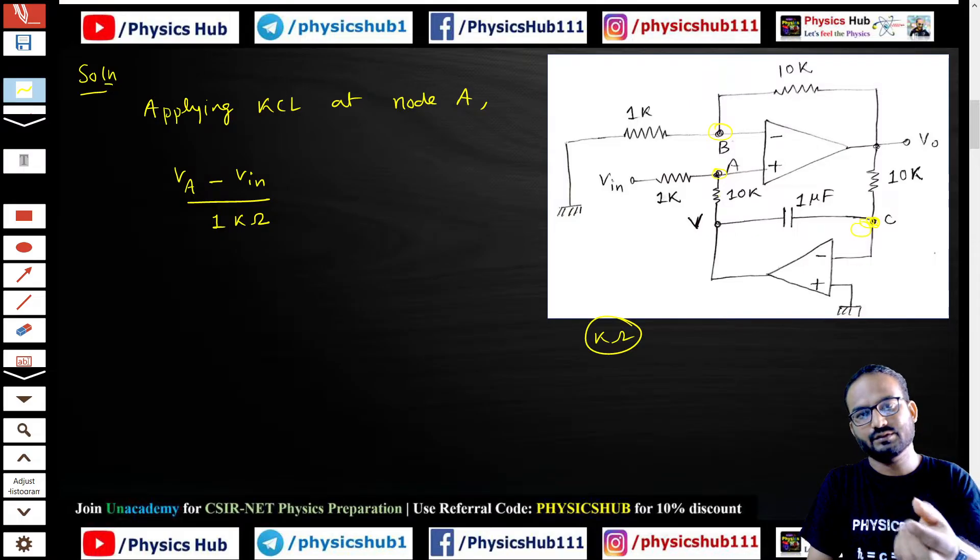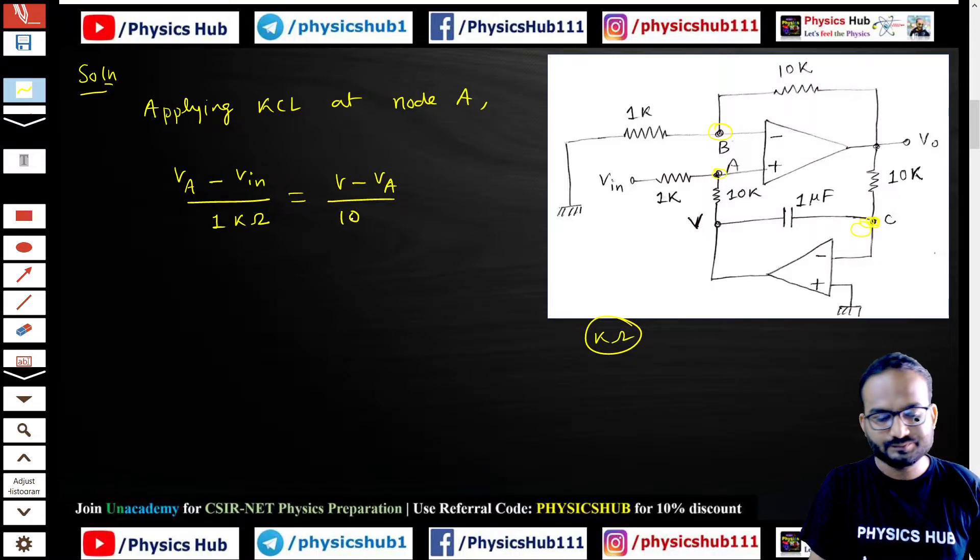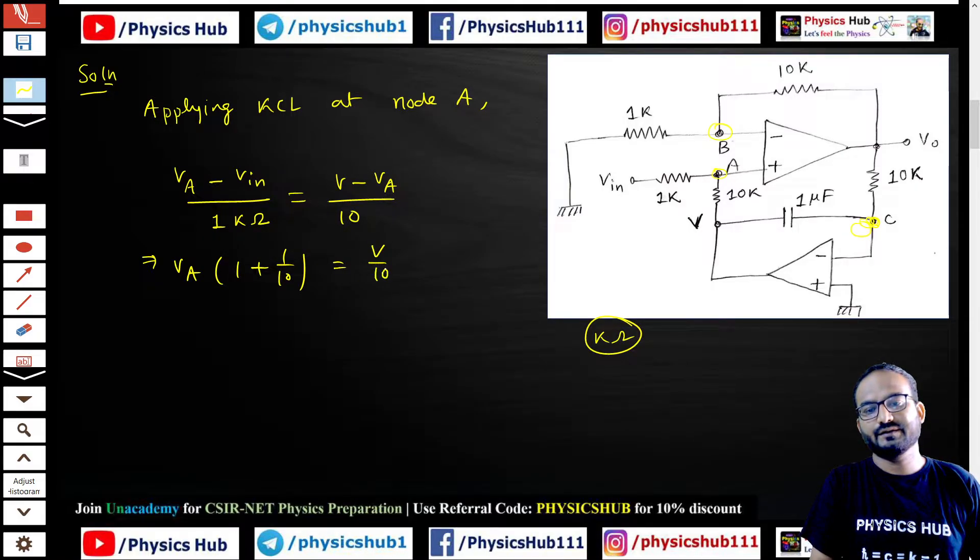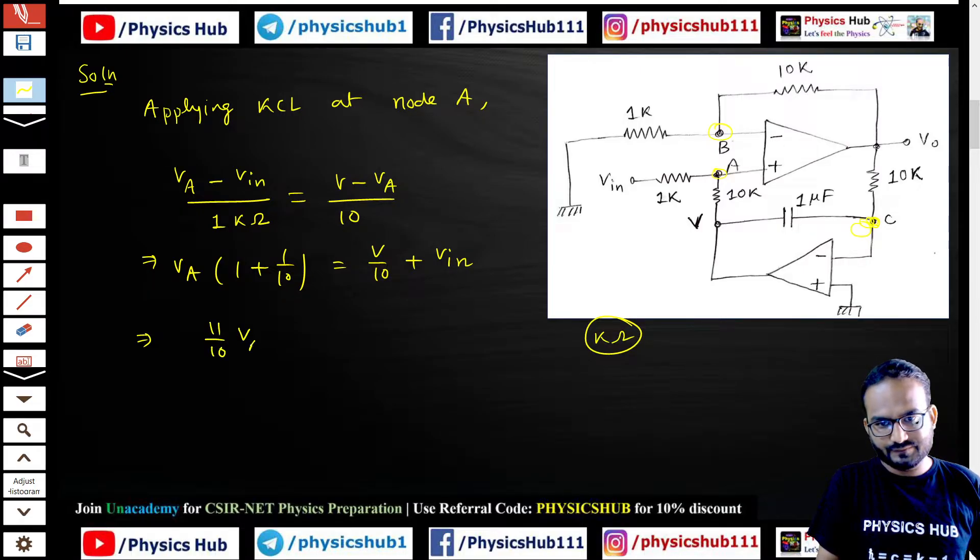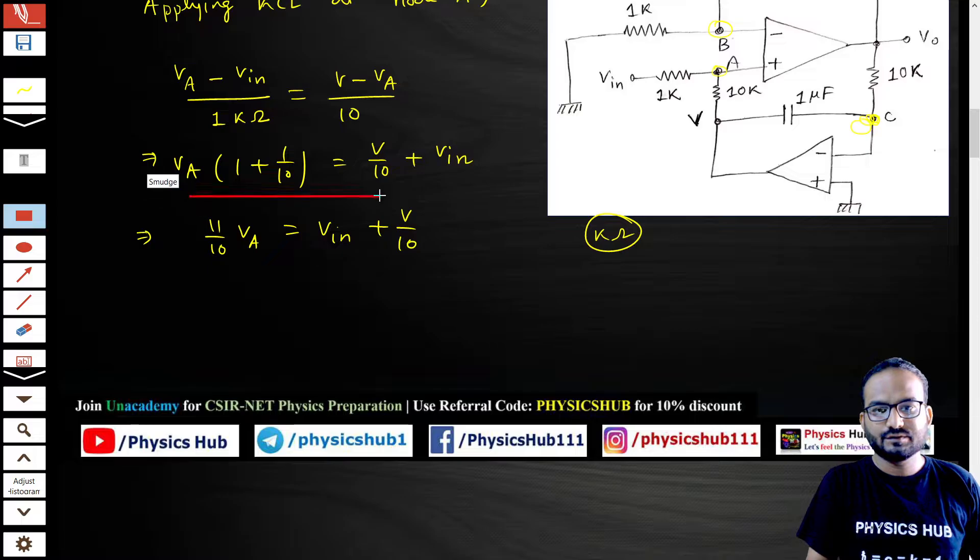V_A minus V_in would equal V minus V_A by 10. You can take V_A common, so 1 plus 1/10 equals V by 10 plus V_in. From here you get 11 by 10 V_A equals V_in plus V by 10. Let's name this equation as equation number one.